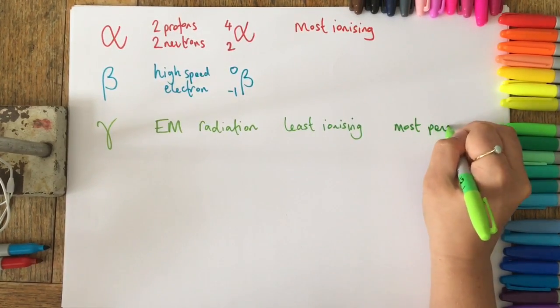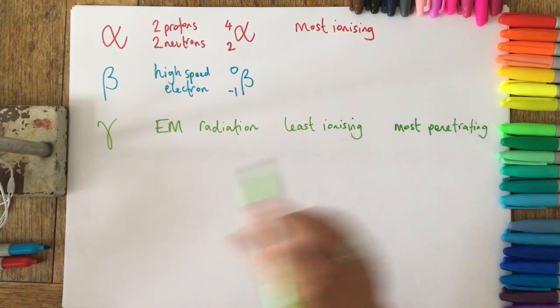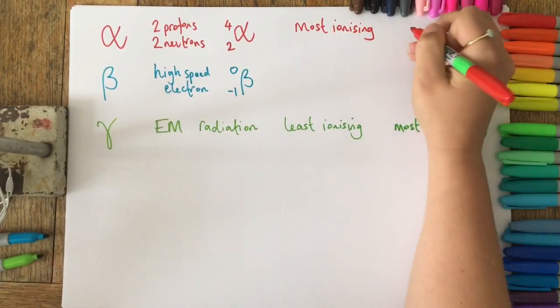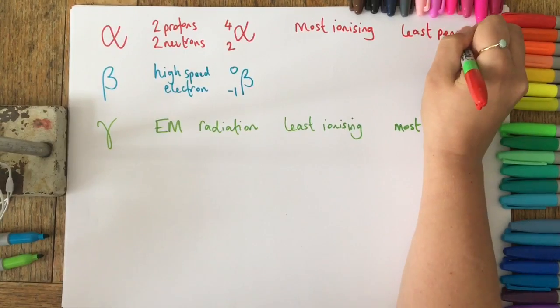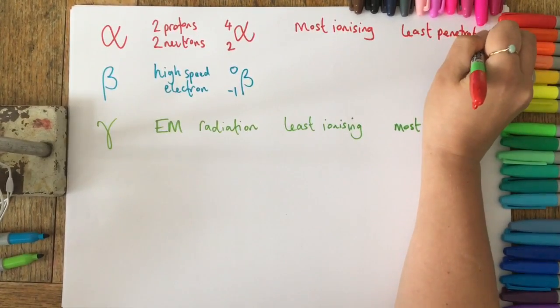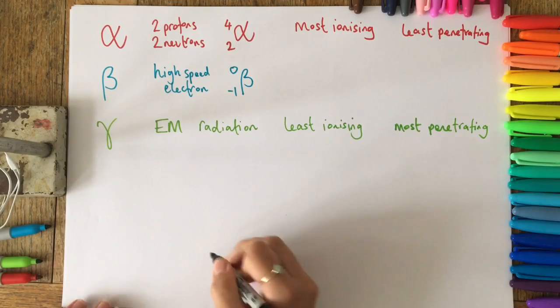You also need to know that gamma is the most penetrating, which means it can go through the most types of materials, and it has the largest range. Whereas alpha is the least penetrating, it gets stopped and absorbed quite easily, even by skin and paper, and its range is very small.